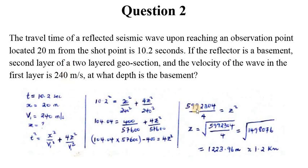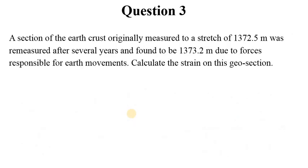Question 3: A section of the earth crust originally measured to a stretch of 1372.5 meters was remeasured after several years and found to be 1373.2 meters. This is an increment in length due to forces responsible for the earth movement. This is part of what we studied under elementary geophysics or geology where we talk about earth movements responsible for the formations.